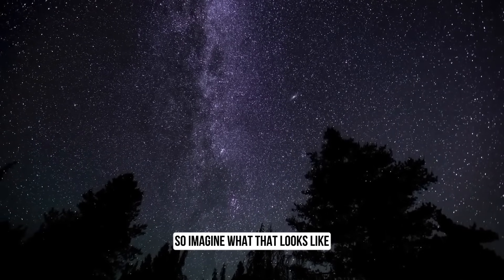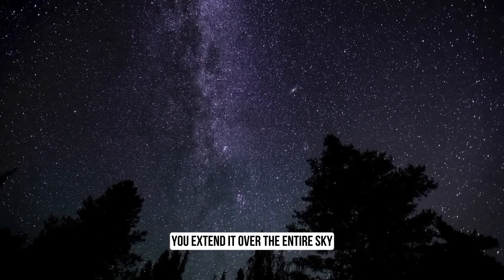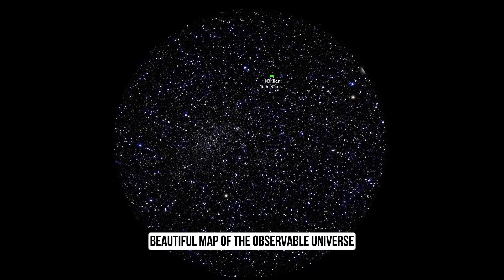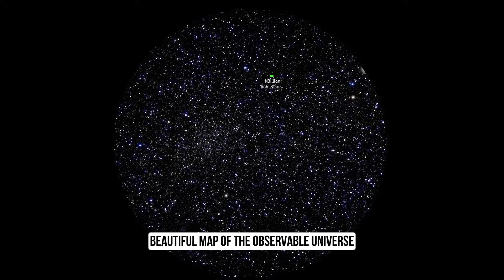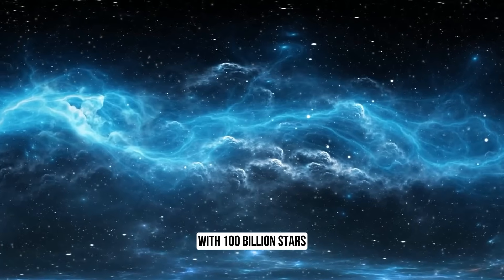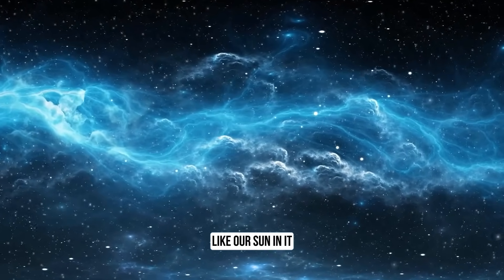So imagine what that looks like when you extend it over the entire sky. Well, this is a beautiful map of the observable universe. Every dot on that map is a galaxy with a hundred billion stars like our sun in it, at least.